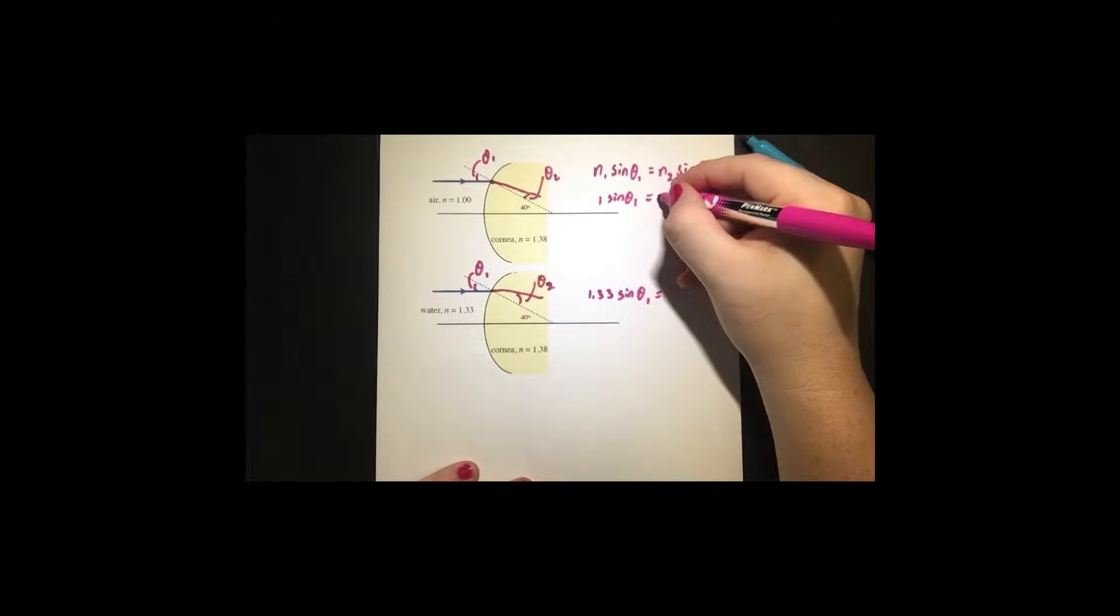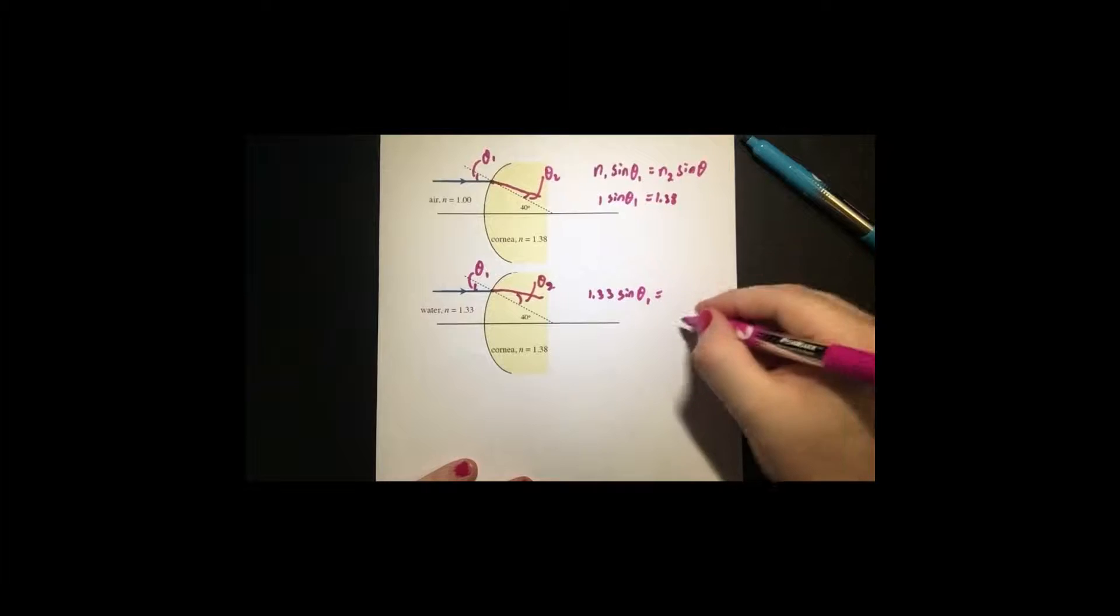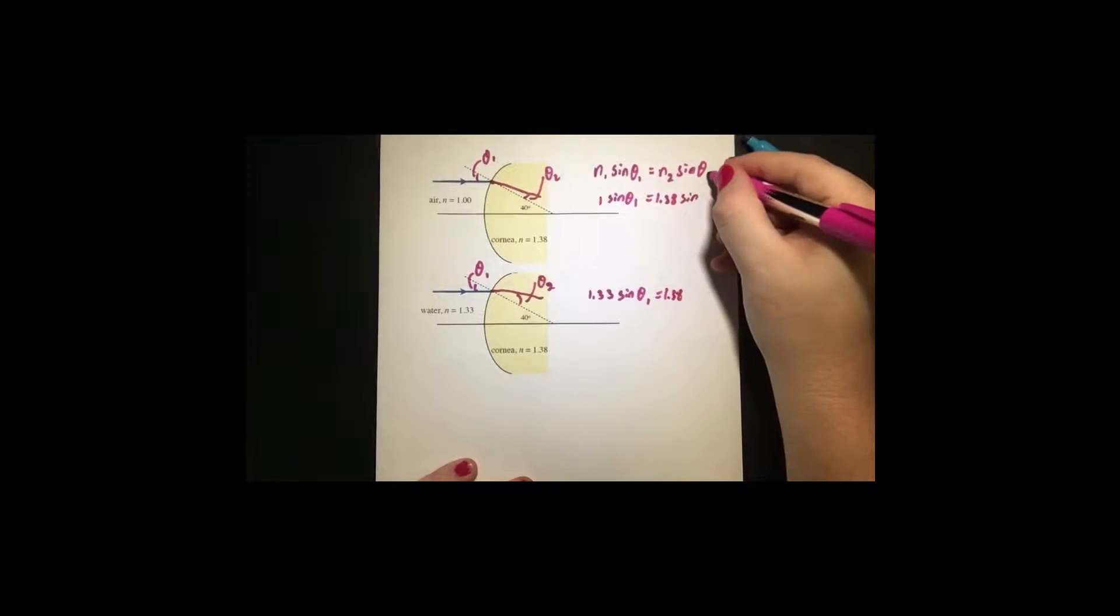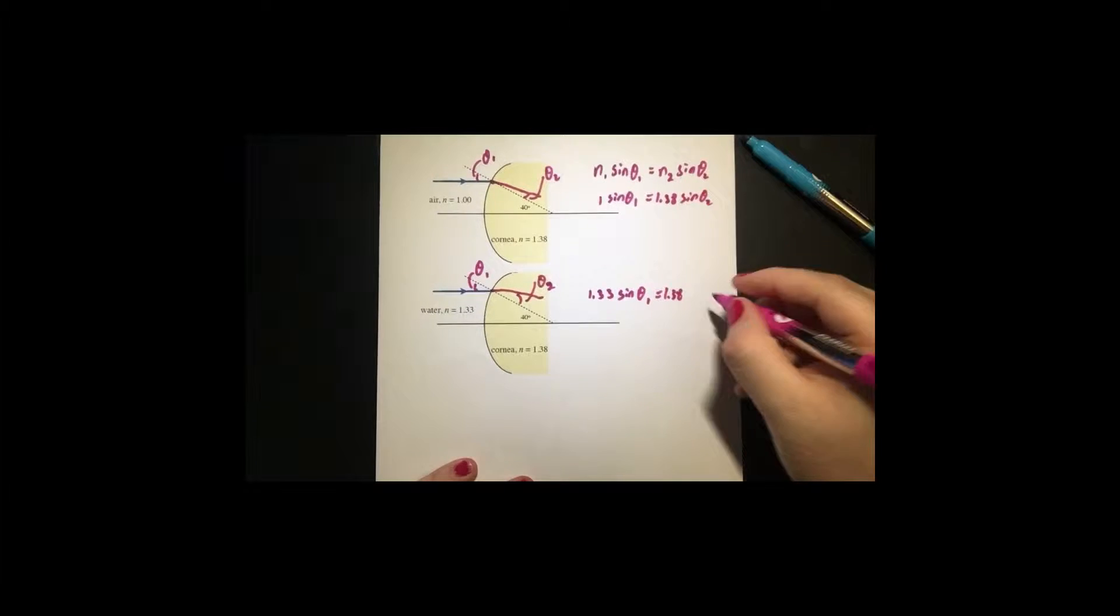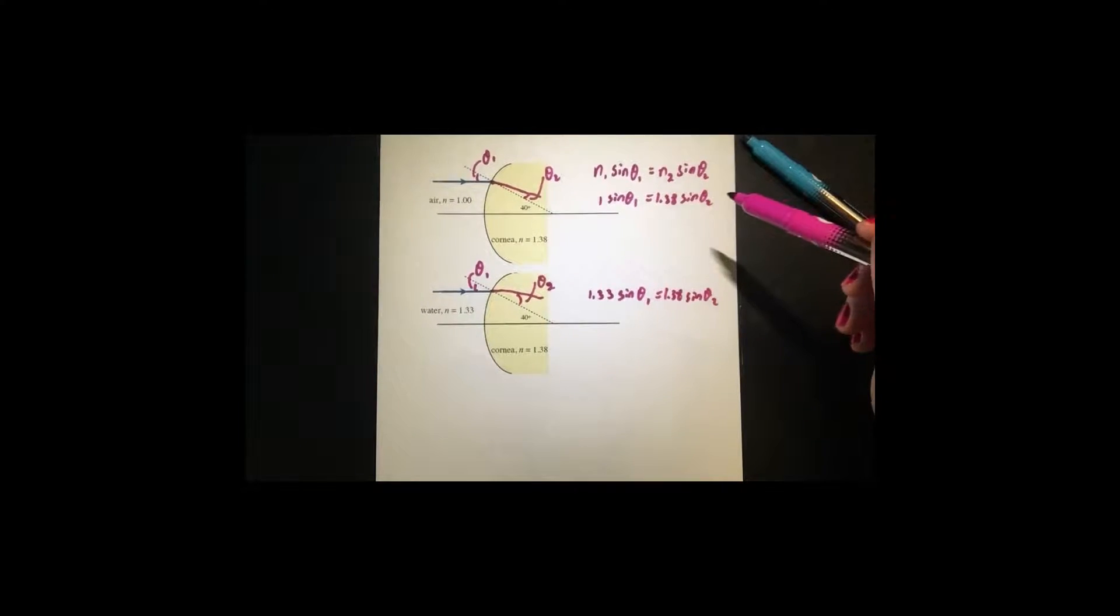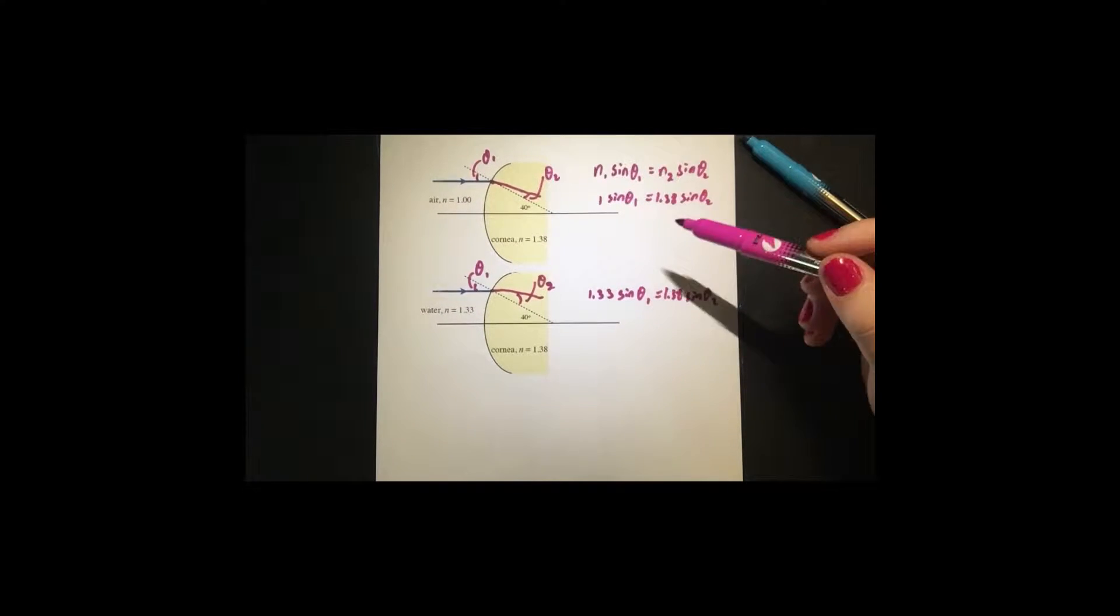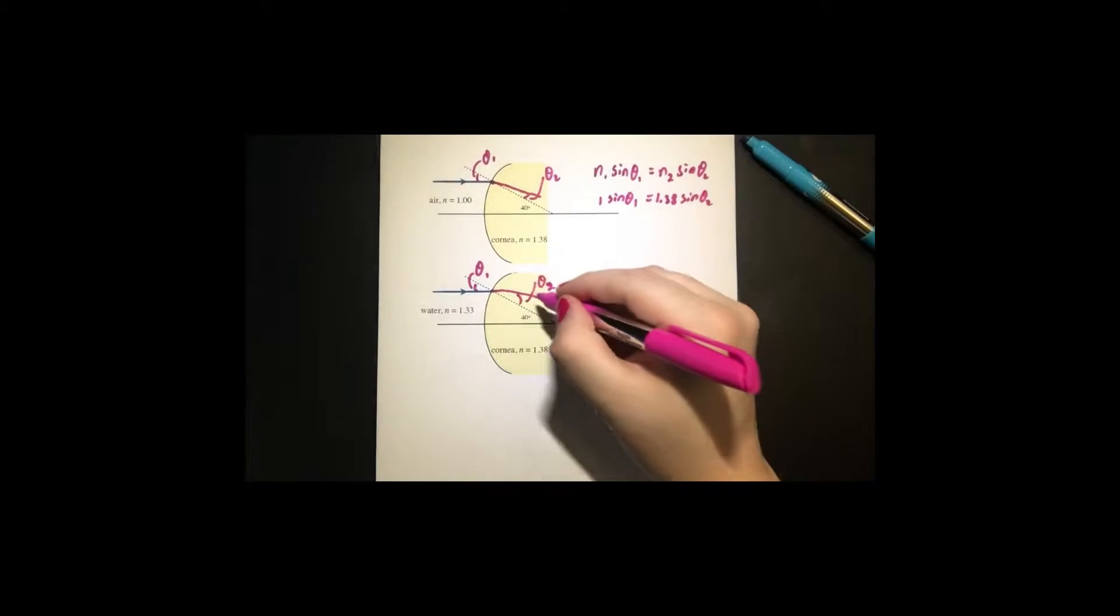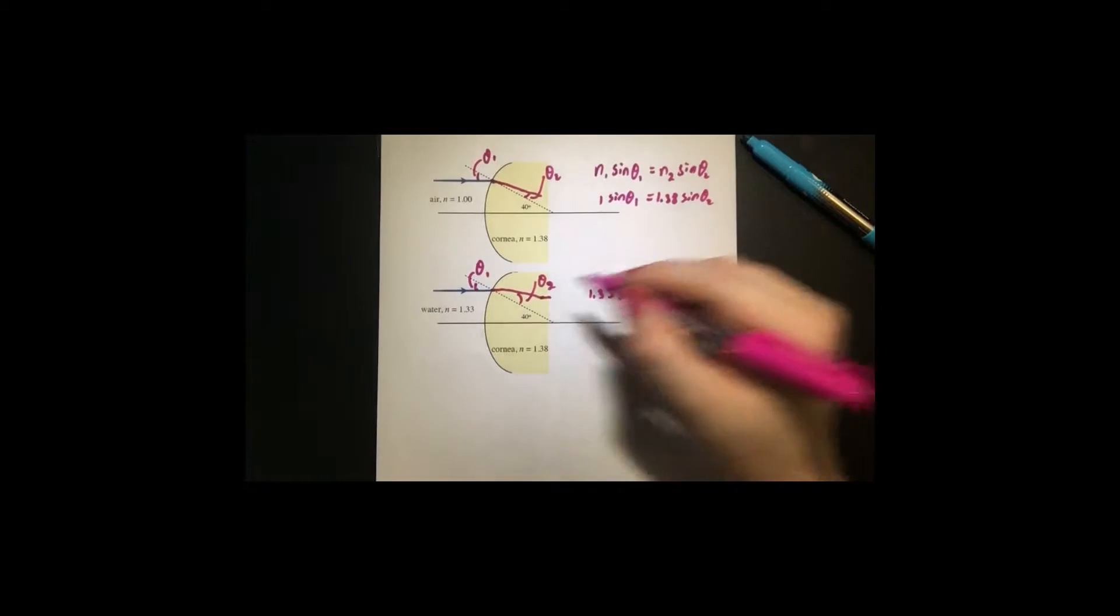So this is 1.38, this is 1.38, this is sine of theta 2 and this is sine of theta 2. So looking at these two, which one do we expect to bend more to focus at the point?